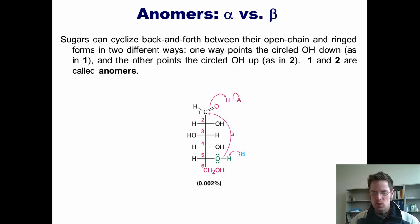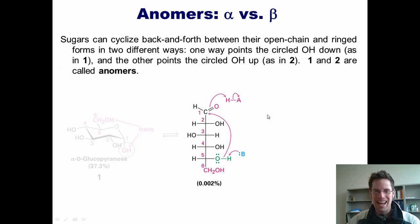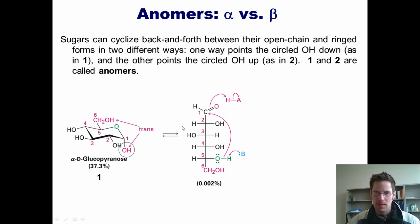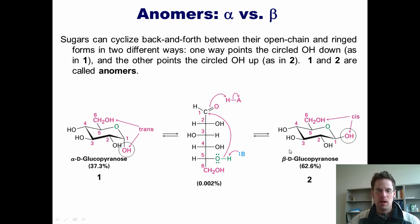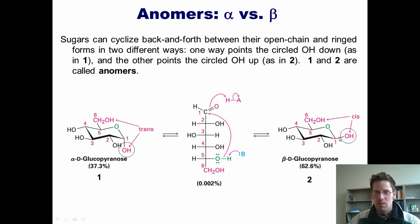Sugars can cyclize back and forth between their open-chain and ring forms in two different ways: one by putting the OH going down, and the other pointing the OH up. These two rings are called anomers of each other. This process of going back and forth in equilibrium between these two rings is called mutarotation, and carbon 1 is called the anomeric carbon.